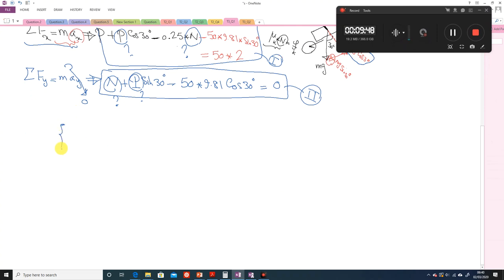If I just simplify it again, from equation one, 1.866 P minus 0.21 N equals to 345.